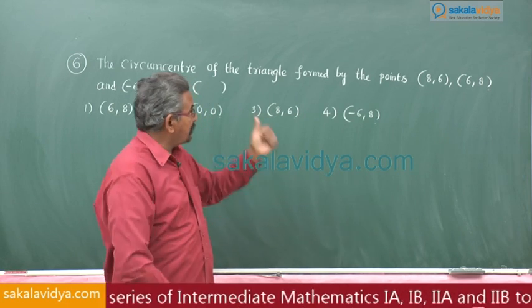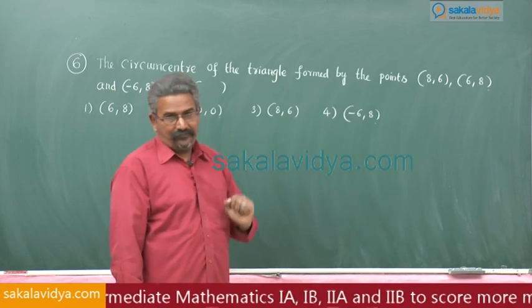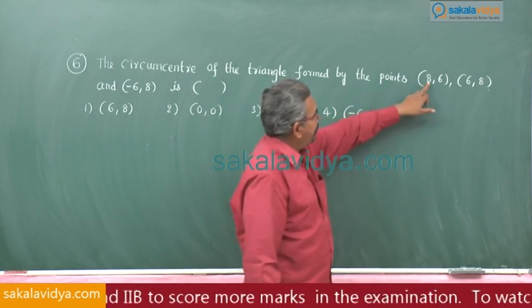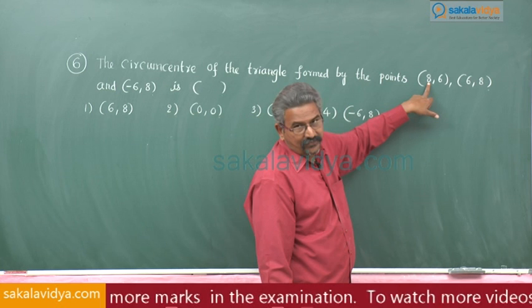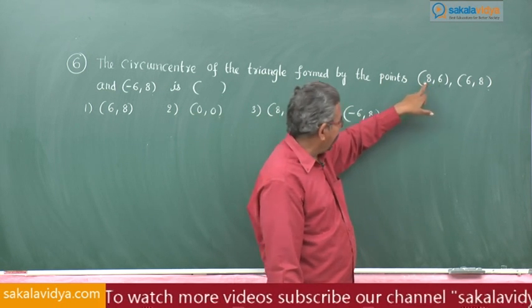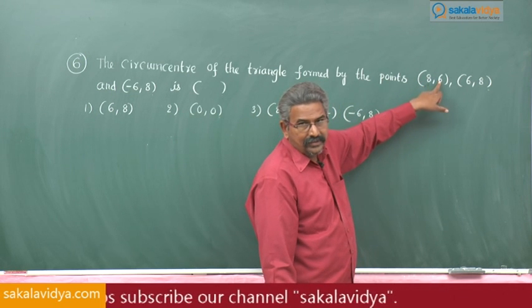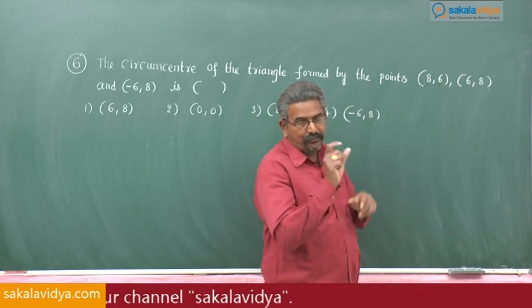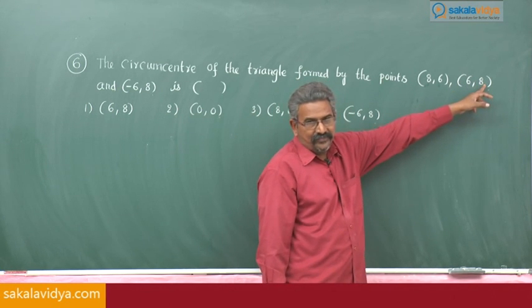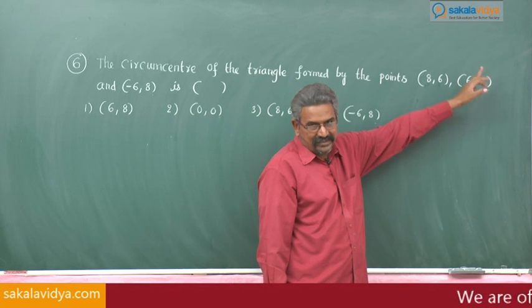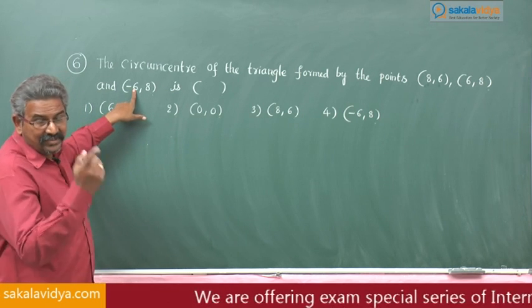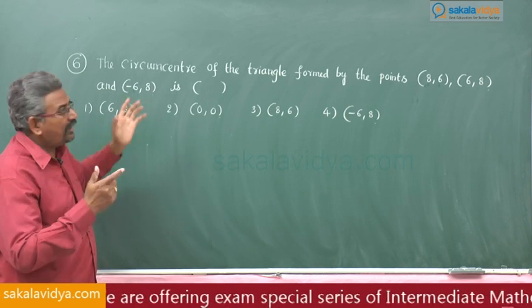So, to avoid that one, first observe the given points, coordinates, vertices. Here 8 square 64, am I correct? 36. 64 sorry, 8 square 64, 6 square 36, 64 plus 36 is 100. Here also same thing we will get it, 6 square 36 plus 64, 100. You check here minus 6 square is also 36 plus 64, 100.